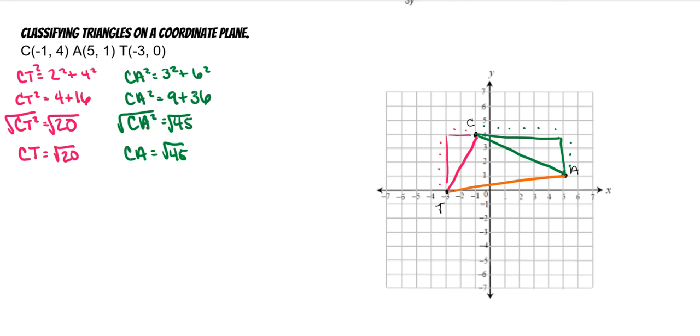And then lastly, we've got AT, which is 1 squared plus 1, 2, 3, 4, 5, 6, 7, 8 squared. 1 squared is 1, 8 squared is 64. AT squared is equal to 65. Take the square root of both. AT is equal to the square root of 65. All of these are different, making this a scalene triangle.